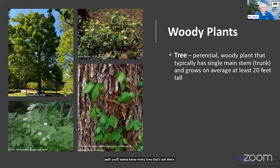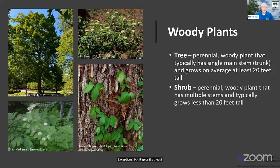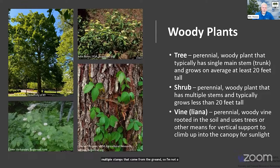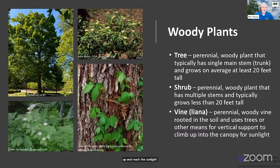Let's break down woody plants a little more. Trees are the focus today, but there are other woody plants. Trees typically have a single main stem and get at least 20 feet tall — though there are always exceptions. Shrubs are smaller, typically less than 20 feet, and often have multiple stems coming from the ground. Then you have vines or lianas — right here in the lower right we have poison ivy. These are perennial woody materials that use trees or other structures to climb and reach sunlight by sending out tendrils.